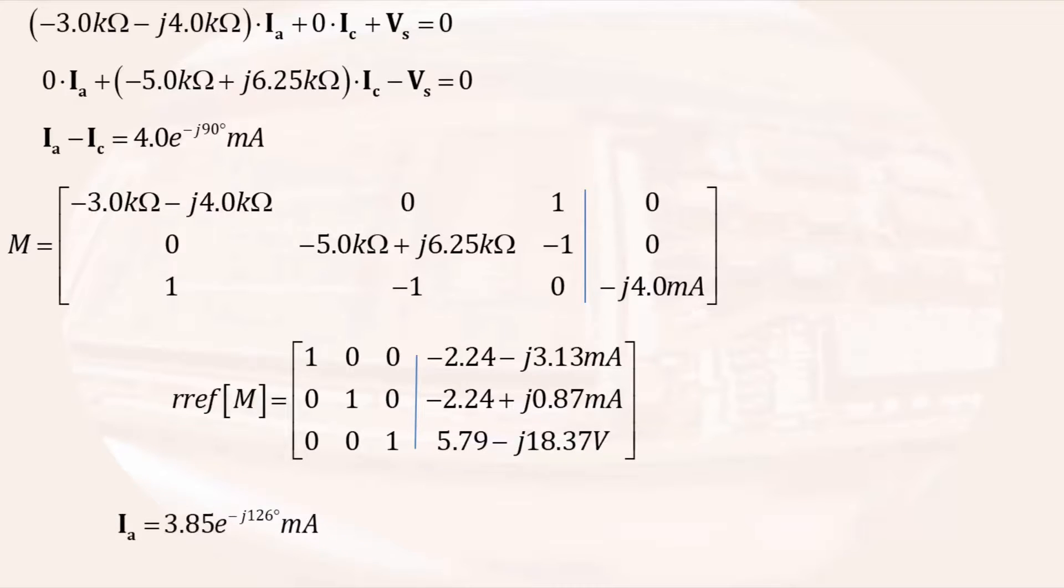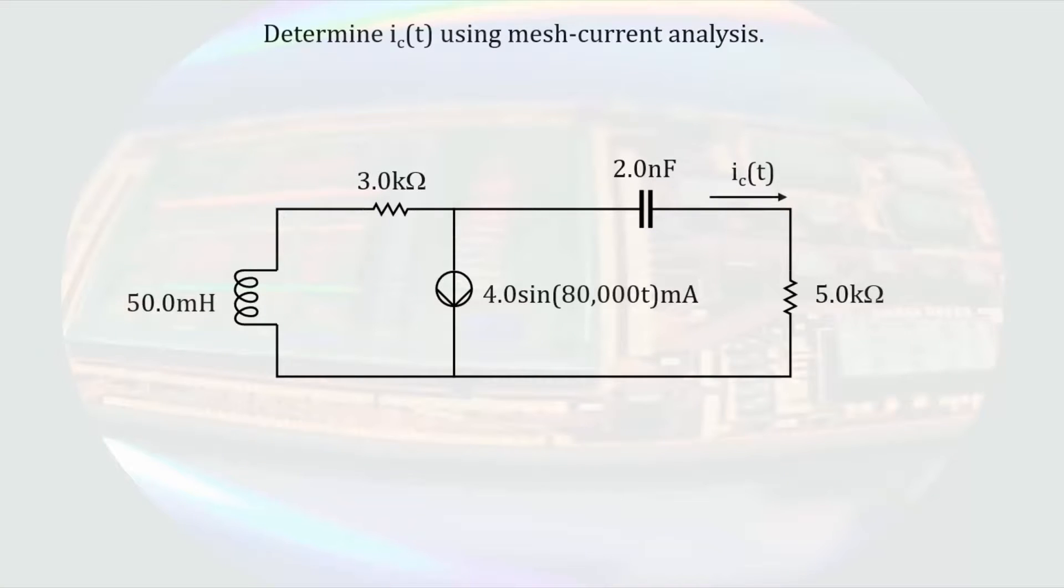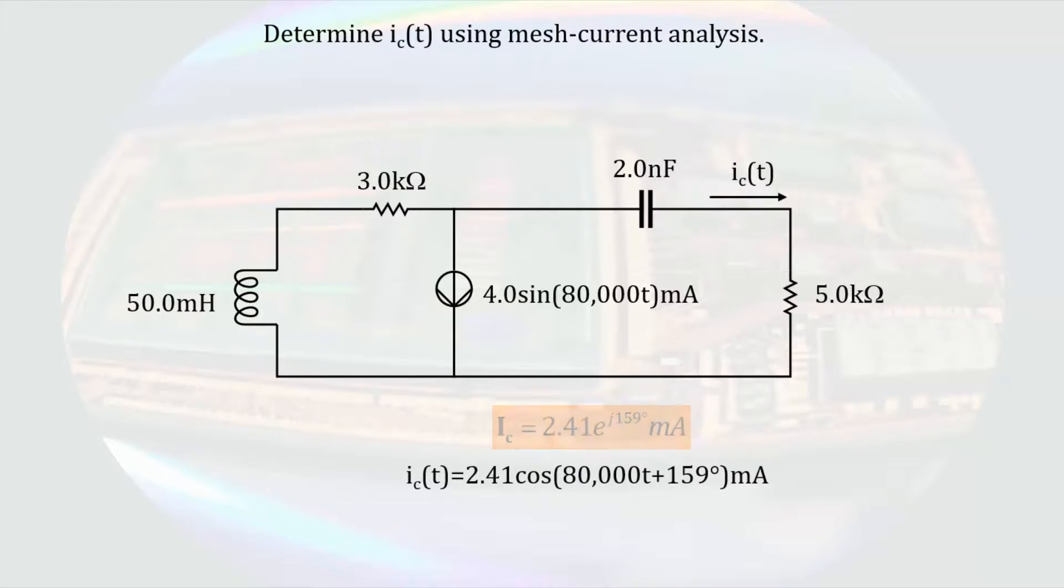Converting each of these to polar form, we have the following. In this case, the solution we are most interested in is Ic. The phasor current Ic is easily converted back to the time domain expression by taking the magnitude and the phase angle and putting them into the cosine function. So we have the current through the capacitor is 2.41 cosine of 80,000 radians per second times time plus 159 degrees milliamps.